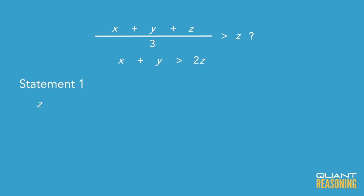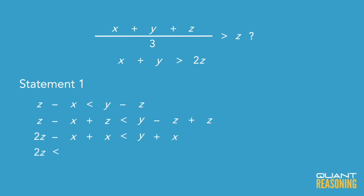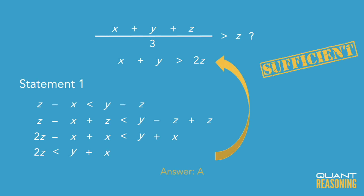Now looking at statement one, if we add z to both sides of this inequality, and also add x to both sides, we get that 2z is less than x + y. And the question was asking: is x + y greater than 2z? So statement one does give us exactly what we wanted to know, and therefore the correct answer is A.